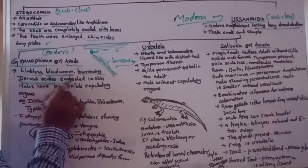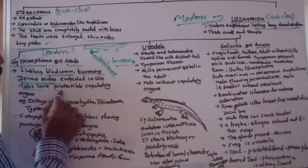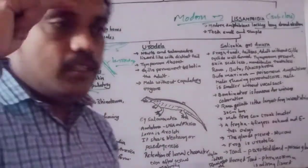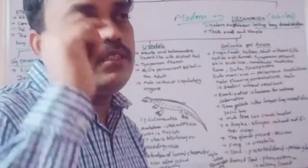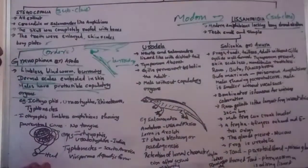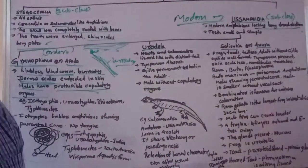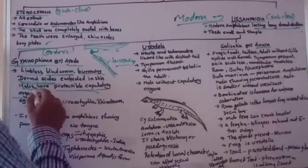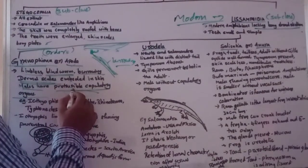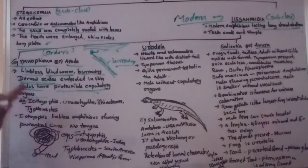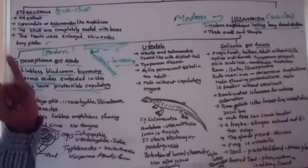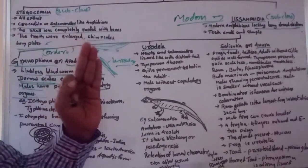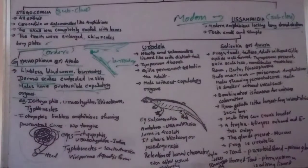The body is covered with dermal scales embedded in skin. The male has a protrusible copulatory organ, which is useful for inserting into the female body during sexual reproduction. The key characters of Gymnophiona to remember: limbless, burrowing, and blind worms.